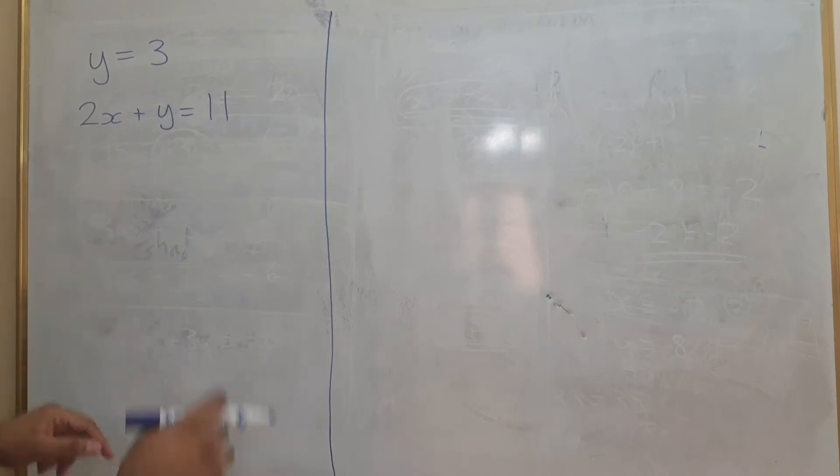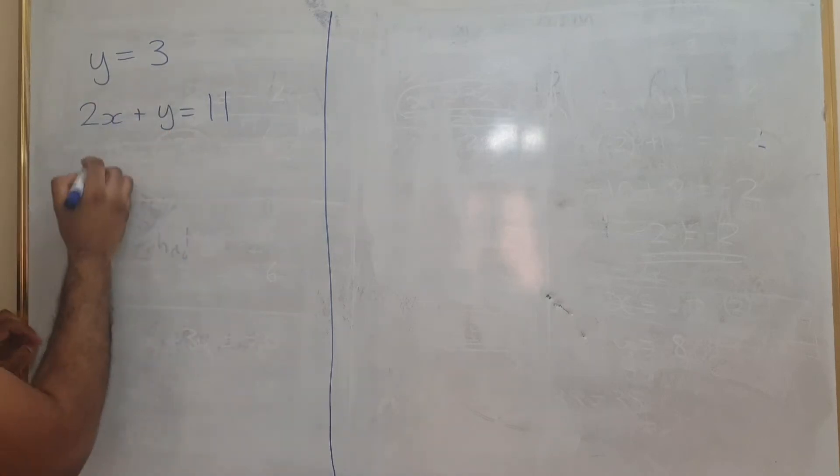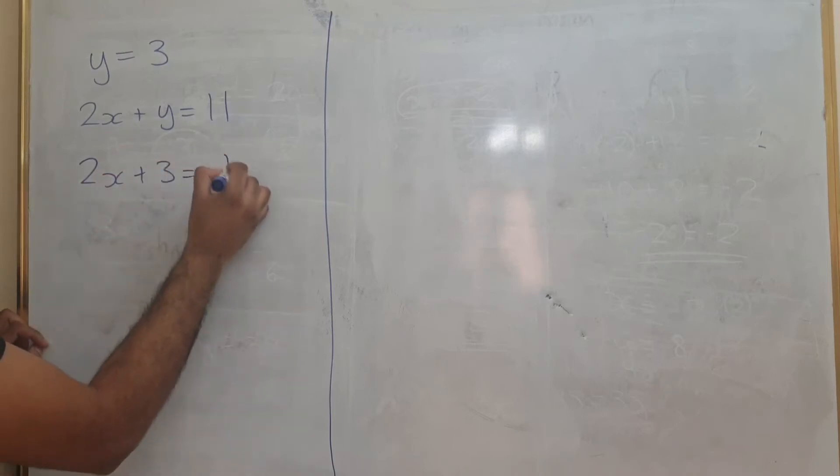So what we need to do to solve this equation is substitute y equals 3 into there. So 2x plus 3 equals 11, minus 3 from both sides.